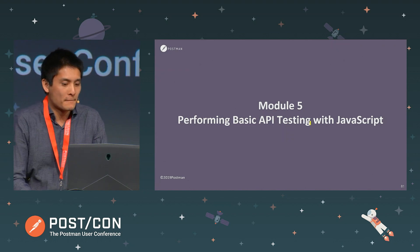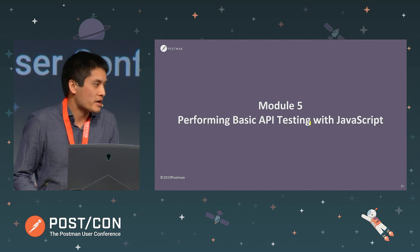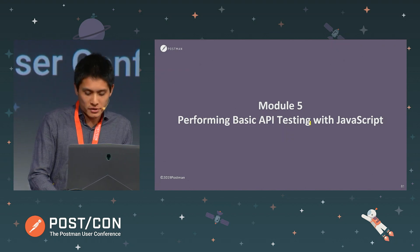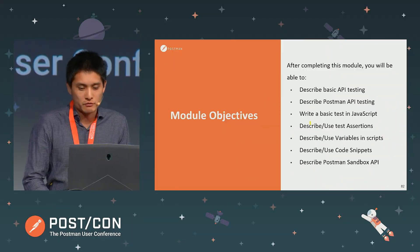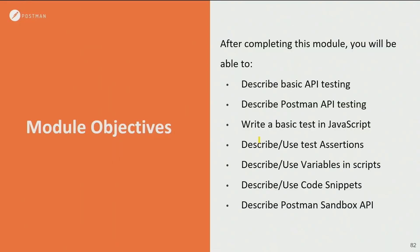Next up, we have some basic API testing using JavaScript. In this module, we're going to describe what's involved in testing our APIs and how we can use Postman for that, and we'll look at writing some basic tests in JavaScript. If you don't know any JavaScript, don't panic — we don't actually have to write any actual code. We're primarily going to be using code snippets that are available to us.